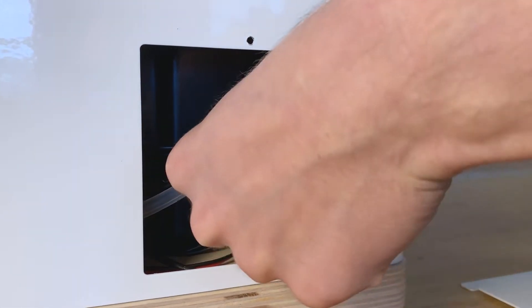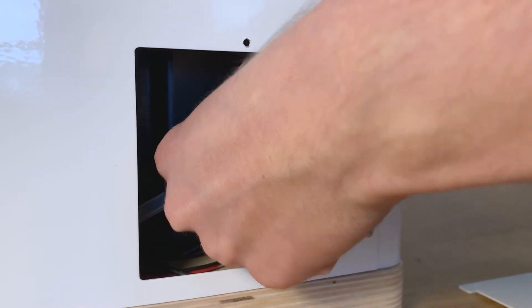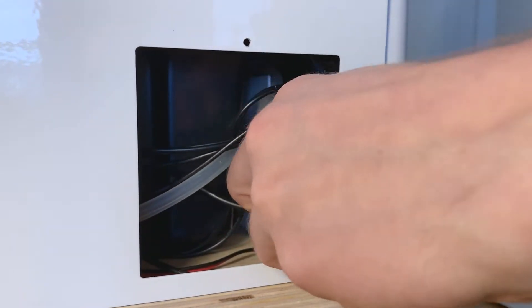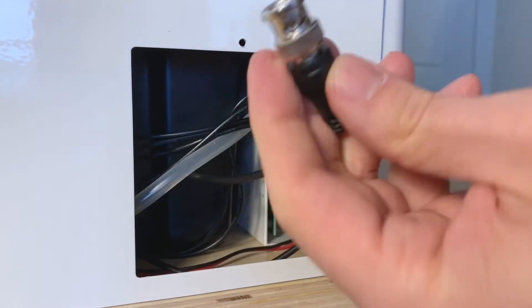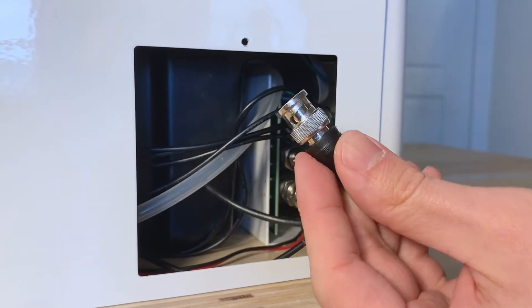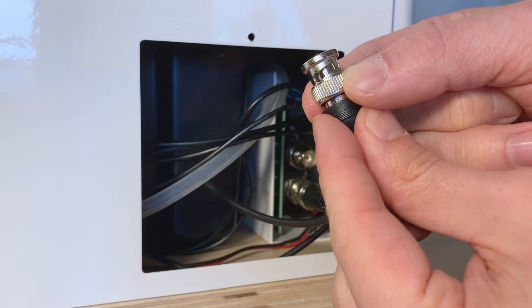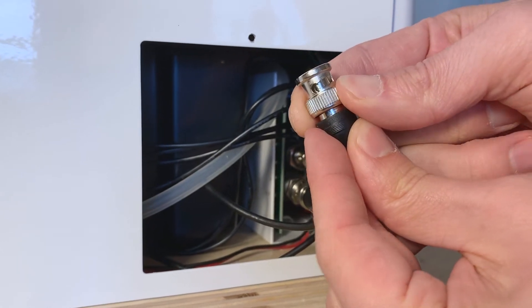Once you've twisted it, you can pull straight back and out, and the connector is going to come off for you. This is what the connection piece looks like that you're actually twisting as well.